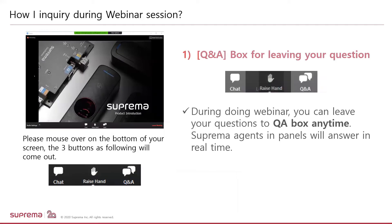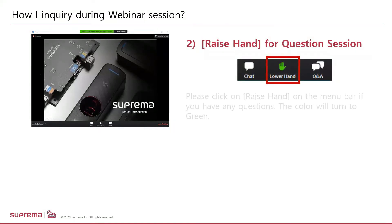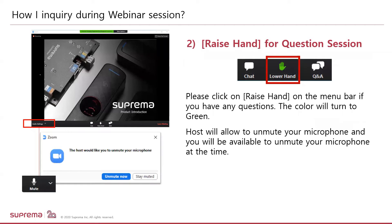Also, some of you might be wondering how to make an inquiry during the webinar session. If you have any questions, you may just leave a question in the Q&A box. You can roll over your mouse on the bottom of your screen, then three buttons will come up. Even during the webinar, one of our team members is waiting for your questions. At the end of the webinar, you can speak your questions by raising your hand — please click the raise hand icon so that I can unmute your microphone.